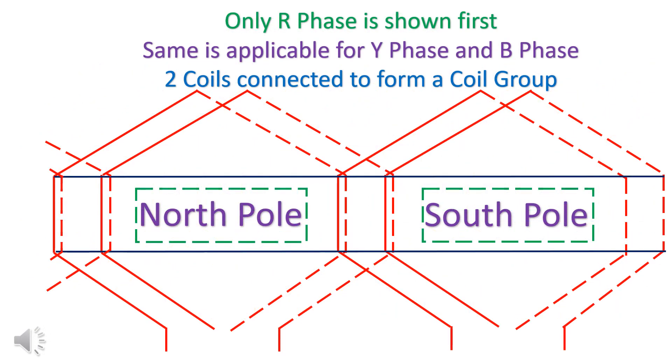Only R phase is shown first. Same is applicable for Y phase and B phase. Two coils are connected to form a coil group.